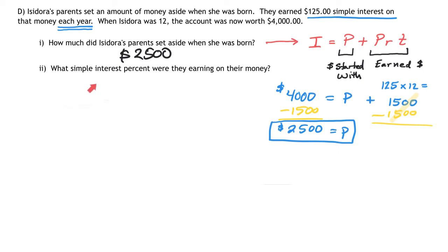Next, the question asks what interest rate was it invested at. Now that I know the principal and the time, I can fill in all these numbers. I can go back to my formula and fill it in this way. My investment total is $4,000, my principal is $2,500, the r I'm going to leave where it is, and the t is 12 years.